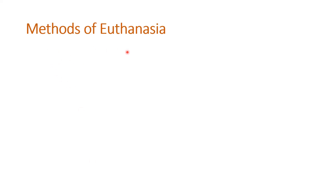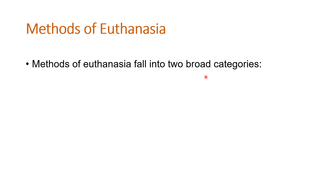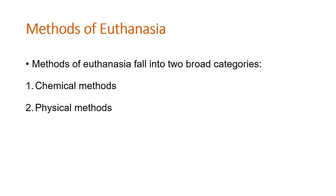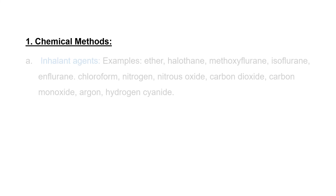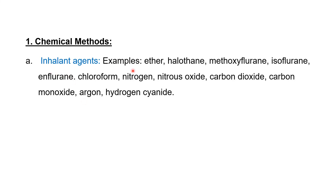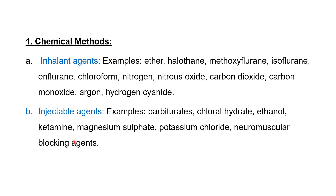Methods of euthanasia fall into two broad categories: chemical and physical. Chemical methods include inhalant agents such as ether, halothane, methoxyflurane, isoflurane, enflurane, chloroform, nitrogen, nitrous oxide, carbon dioxide, carbon monoxide, argon, hydrogen, and cyanide. Injectable agents include barbiturates, chloral hydrate, ethanol, ketamine, magnesium sulfate, potassium chloride, and neuromuscular blocking agents.